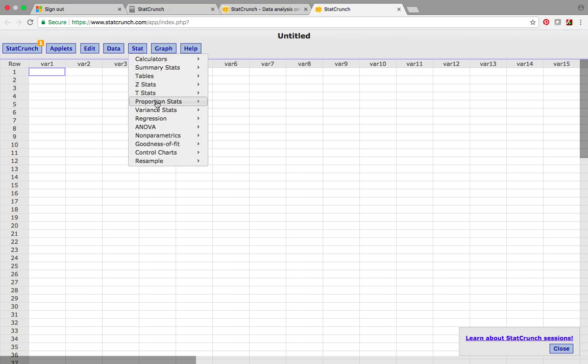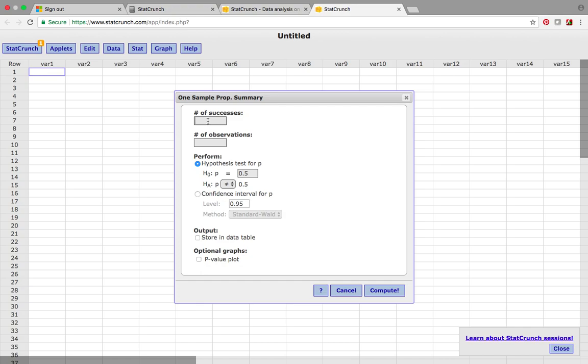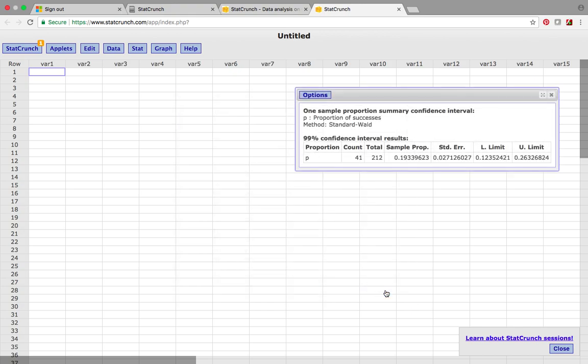If we wanted to change the confidence level, it would be very easy to do. We would just go to proportion, one sample with summary, and again we have 41 out of 212. To change the confidence level, if we want 0.99 for example, we just change it to 0.99. This should be kind of a welcome relief from some of the things we've done previously, because once you get a fundamental understanding of confidence intervals, learning new types of confidence intervals is not as bad.